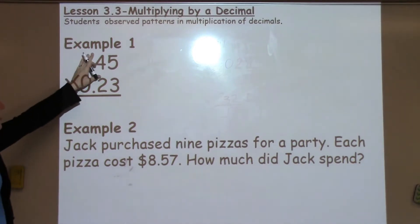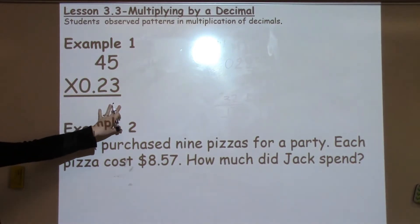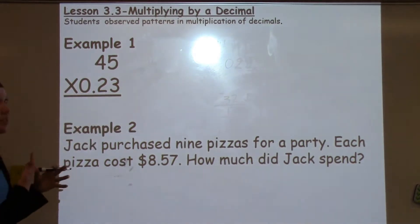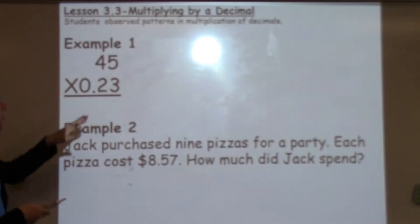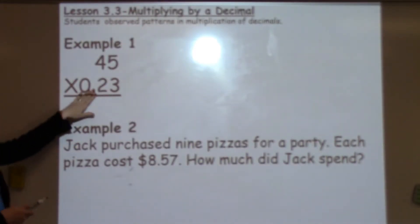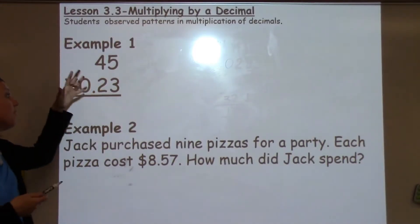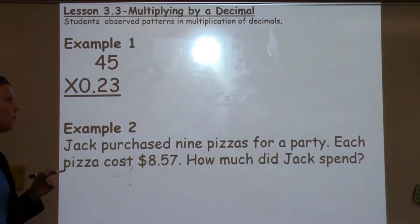Our first example is 45 times 23 hundredths. The very first thing we tell students to do is go ahead and multiply this normally. We'll add in the decimal at the very end, and 6th graders are very familiar with multiplication.